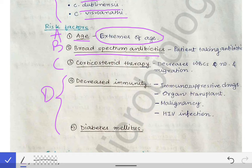Corticosteroids decrease immunity by reducing the movement of lymphocytes and neutrophils to the site of infection. They also decrease WBC numbers and migration, thereby reducing immunity and predisposing to candidiasis infection.